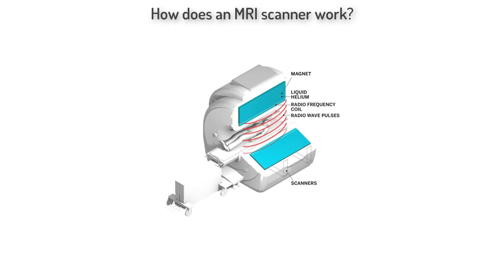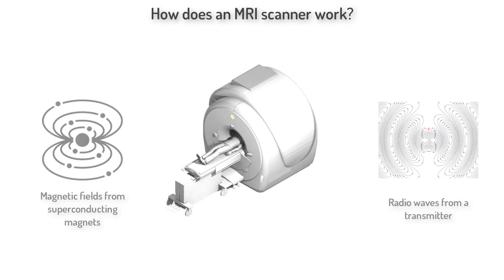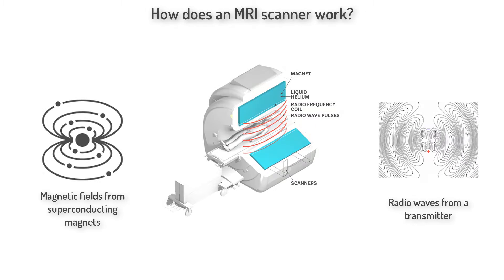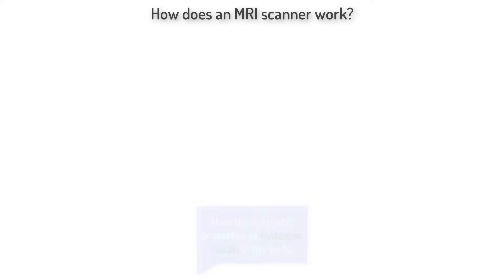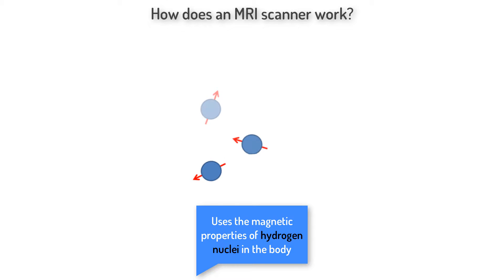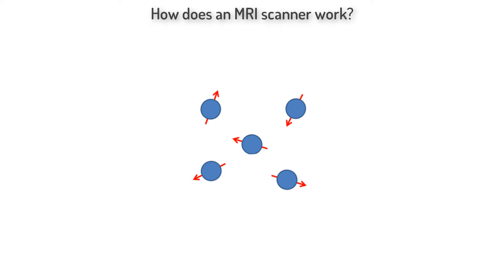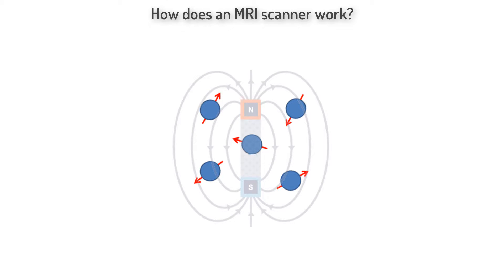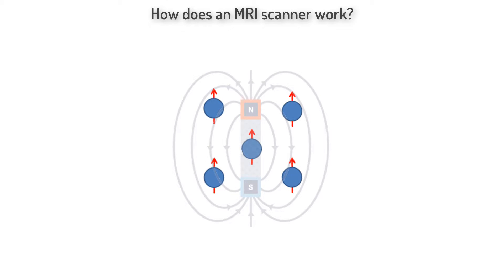An MRI scanner works by using powerful magnetic fields and radio waves to measure the position of hydrogen nuclei, or protons, which are abundant in bodily water and fat. Under normal conditions, these protons are spinning in various directions on their axis, but under the influence of a strong magnetic field, they all align in the direction of the field.